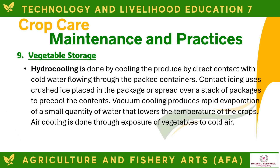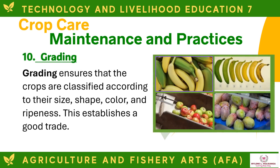Hydro-cooling is done by cooling the produce through direct contact with cold water flowing through packed containers. Contact icing uses crushed ice placed in the package or spread over a stack of packages. Vacuum cooling produces rapid evaporation of a small quantity of water that lowers the temperature of crops. Air cooling is done through exposure of vegetables to cold air. Grading ensures crops are classified according to their size, shape, color, and ripeness, establishing good trade.